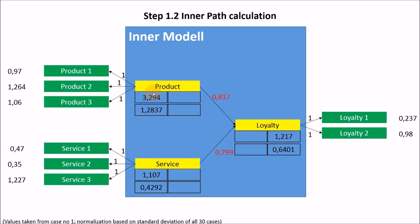Step 1.2 is the inner path calculation. This is done by taking the covariances between the outer approximations across all 30 cases. For example, we take the product and loyalty outer approximation values and calculate the covariance, getting 0.817. We do the same for service and loyalty, getting 0.799.